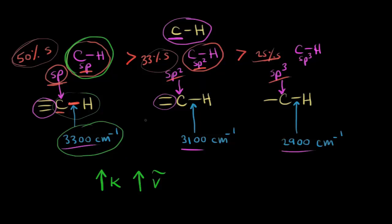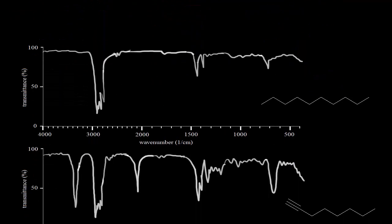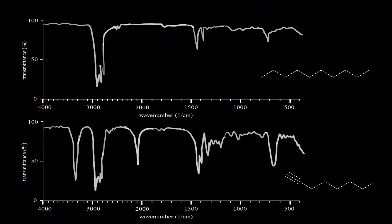Now that we understand how hybridization affects wave numbers, we can look at some IR spectra for hydrocarbons and analyze them. Let's compare alkanes and alkynes. We'll look at two IR spectra: the first is for decane, and the second is for 1-octyne, which has a triple bond.